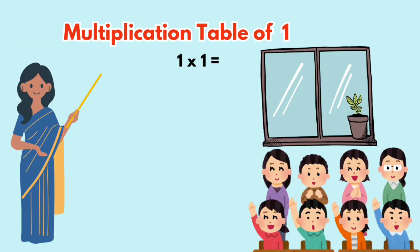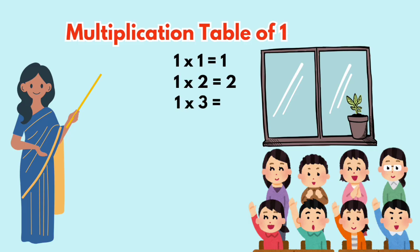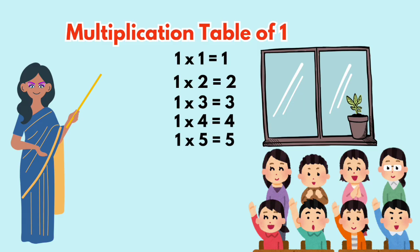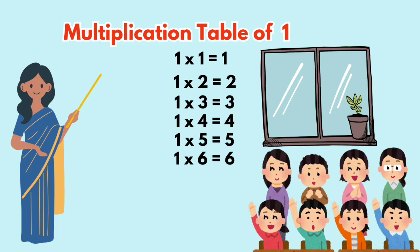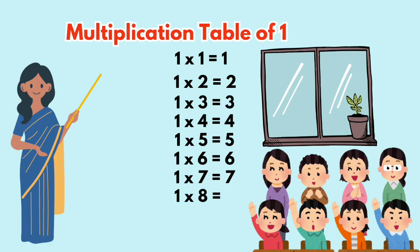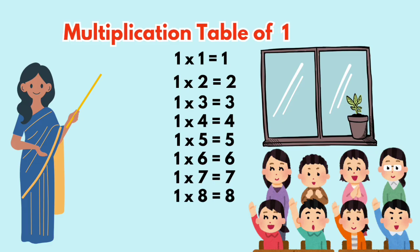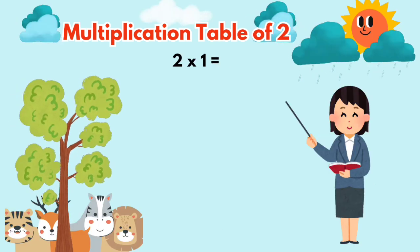1's a 1, 1-2's a 2, 1-3's a 3, 1-4's a 4, 1-5's a 5, 1-6's a 6, 1-7's a 7, 1-8's a 8, 1-9's a 9, 1-10's a 10.